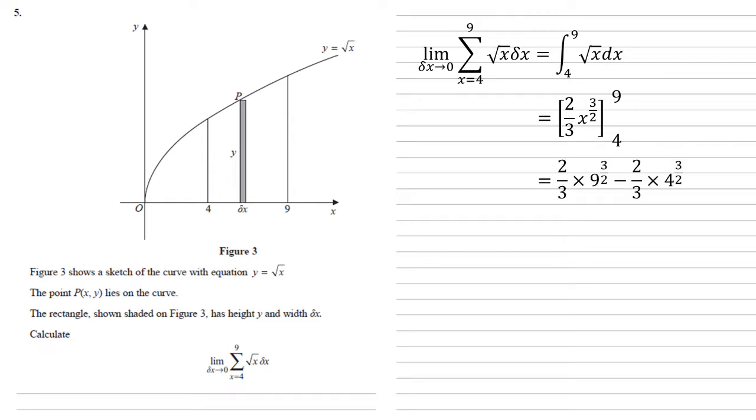Substituting the 4 and the 9 gives us 2 thirds times 9 to the power of 3 over 2 minus 2 thirds times 4 to the 3 over 2, which is 2 thirds times 27 minus 2 thirds times 8, which is 38 over 3.